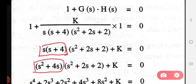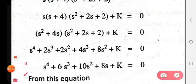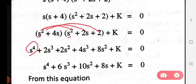Expanding the brackets, first multiply s by (s+4) to get s²+4s. Then multiply this by (s²+2s+2). The first term s² times s² gives s⁴. Then s² times 2s gives 2s³. Then s² times 2 gives 2s².